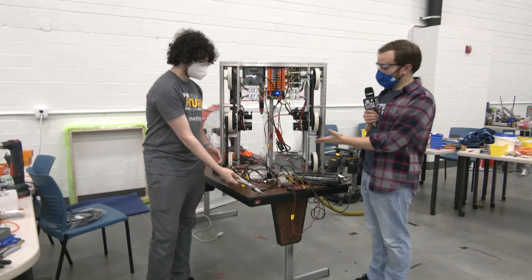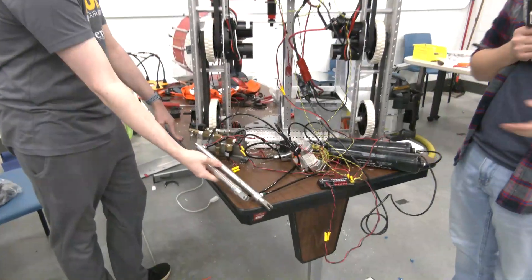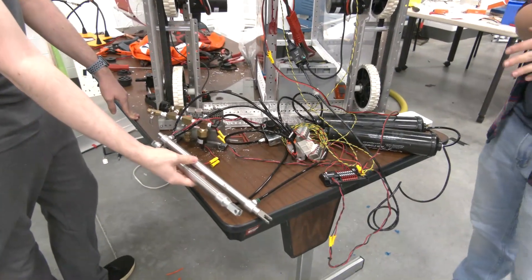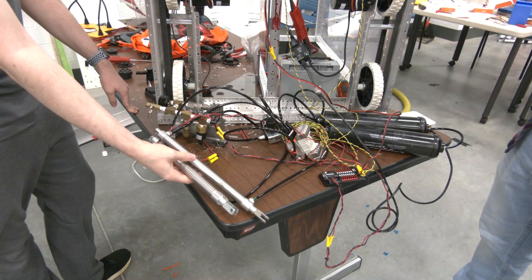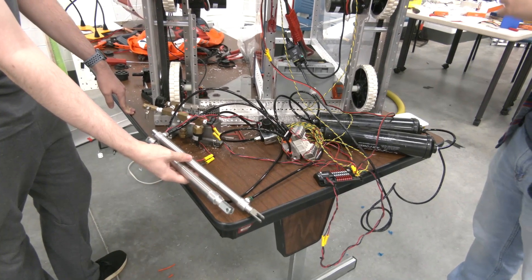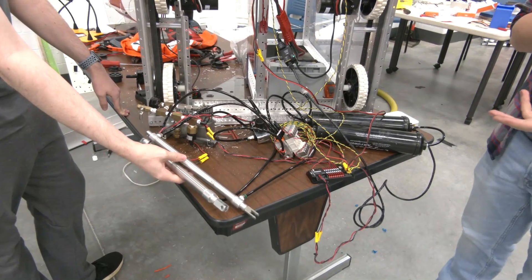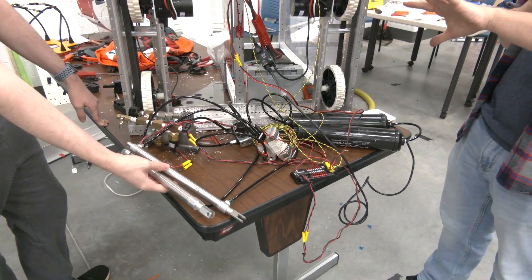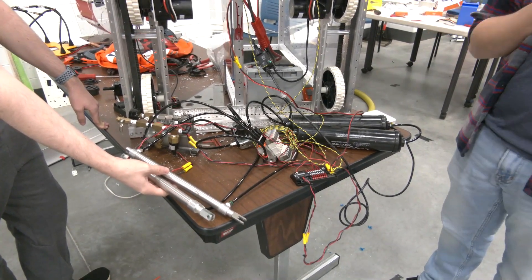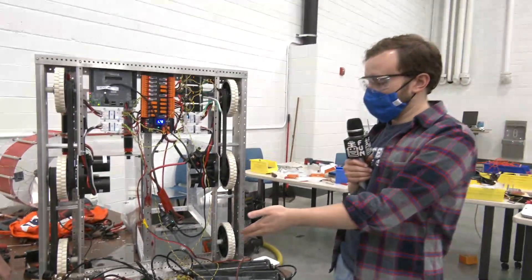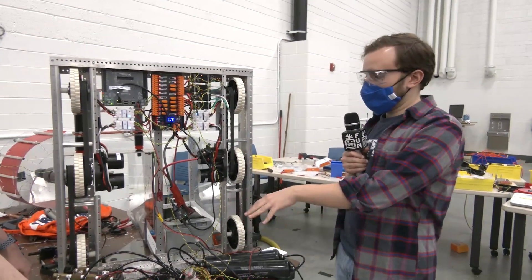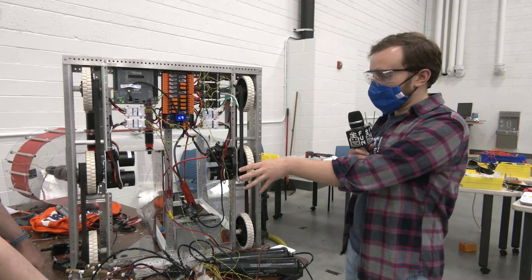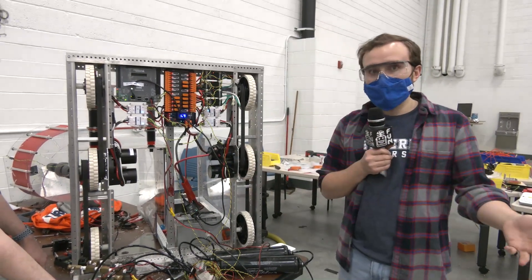As you can see right now, our pneumatic system is not exactly attached to the robot—that's by design. Right now we've had some difficulty getting access to the robot as we're working through a lot of our mechanical systems, so our pneumatics we've been primarily building and assembling and testing off-board the robot in a very similar fashion to what you see here on the table: attached to the robot, wired correctly, but not in their final mounting places.